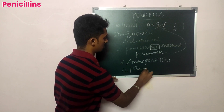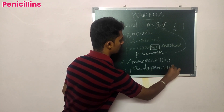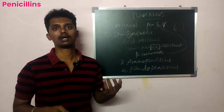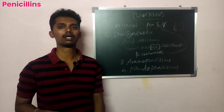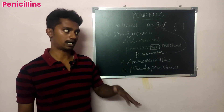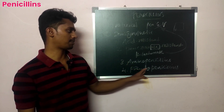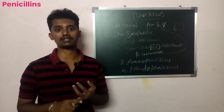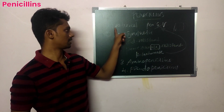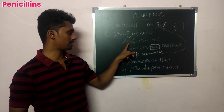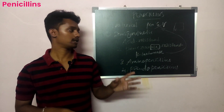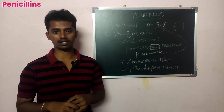Then there are pseudo penicillins — also called carboxy penicillins or ureido penicillins. Example drugs include carbenicillin and piperacillin. Piperacillin is very important because it is widely used intravenously in recent times for very serious emergency conditions.